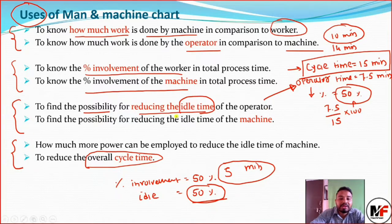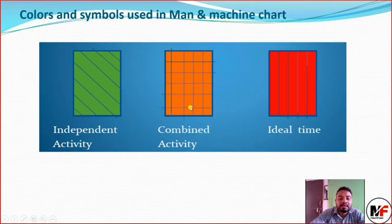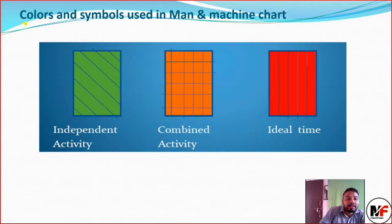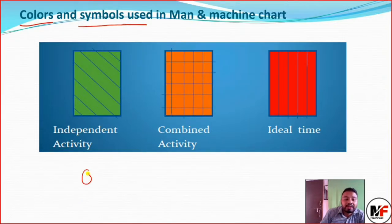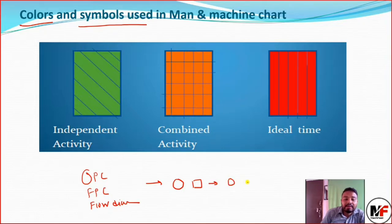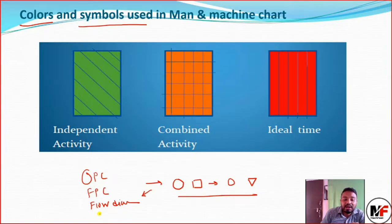Colors and symbols are used in the man and machine chart. Unlike OPC, FPC, and flow diagrams which use symbols like operation, inspection, transport, delay, and storage, the man and machine chart uses its own symbols. The symbols used in OPC, FPC, and flow diagrams will not be used here.